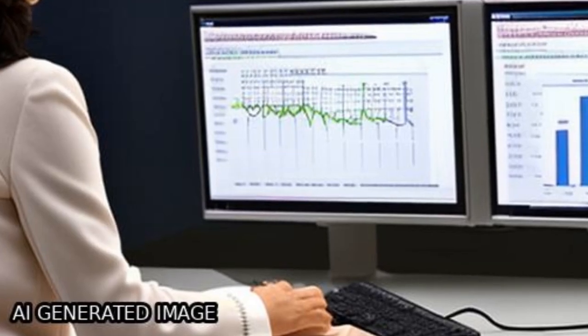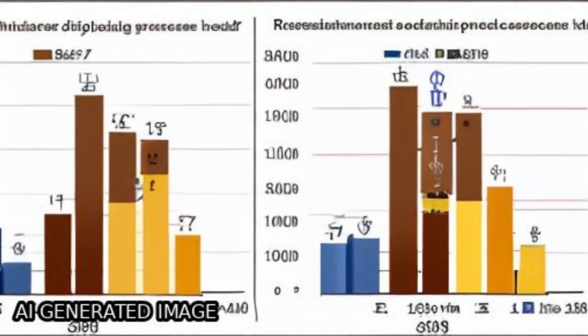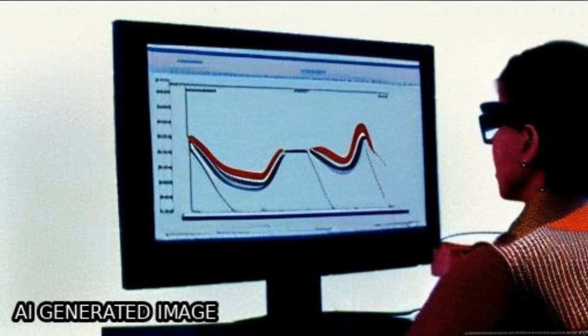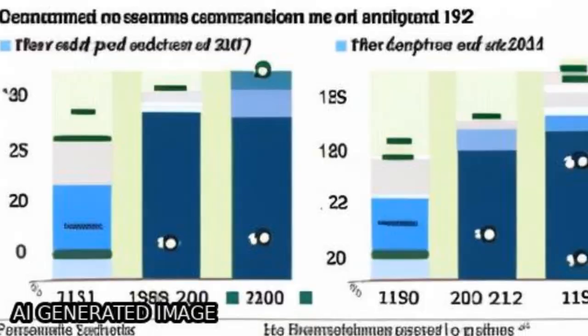The leading causes of blindness were cataract, uncorrected refractive error, and macular degeneration, while the leading causes of MSVI were uncorrected refractive error, cataract, and macular degeneration.